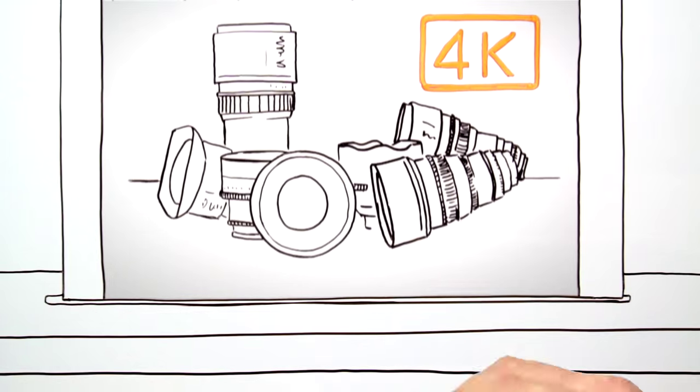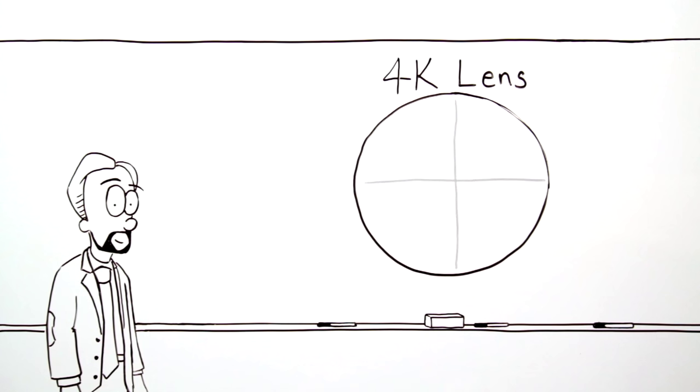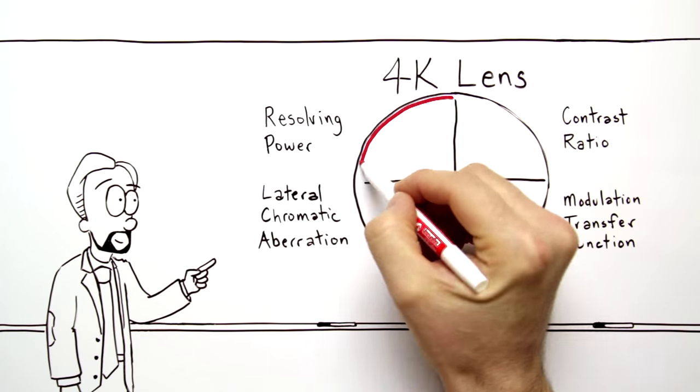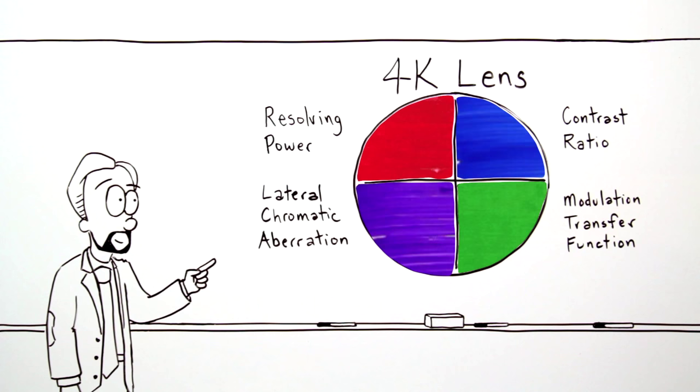But what makes a lens 4K? Let's focus on four central scientific benchmarks for a 4K lens: resolving power, contrast ratio, modulation transfer function, and lateral chromatic aberration. Optimizing our 4K lenses for each of these factors allows you to create sharp, stunning images.